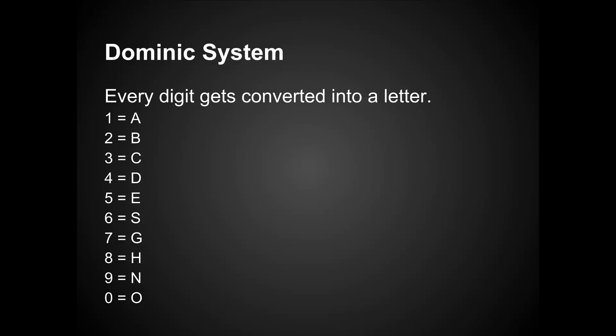The second system is called the Dominic system, and it was created by Dominic O'Brien, who was the world memory champion eight times. Each digit gets converted into a letter, and those letters then become initials for people. One thing that Dominic O'Brien mentions in his books is that you can start with an association system — for example, the number 10 is Dudley Moore because Dudley Moore starred in the movie 10. So that's basically an association system, and then when you run out of associations, you can start using the digit conversion as shown on the screen.